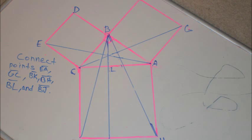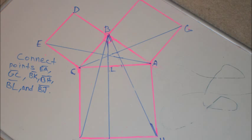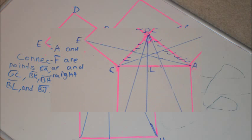Now you have to connect lines from EA, GC, BK, BH, BL, and BJ. This is the end of the construction. And make sure you know that DBA and CBF are collinear and straight. And it's very important.